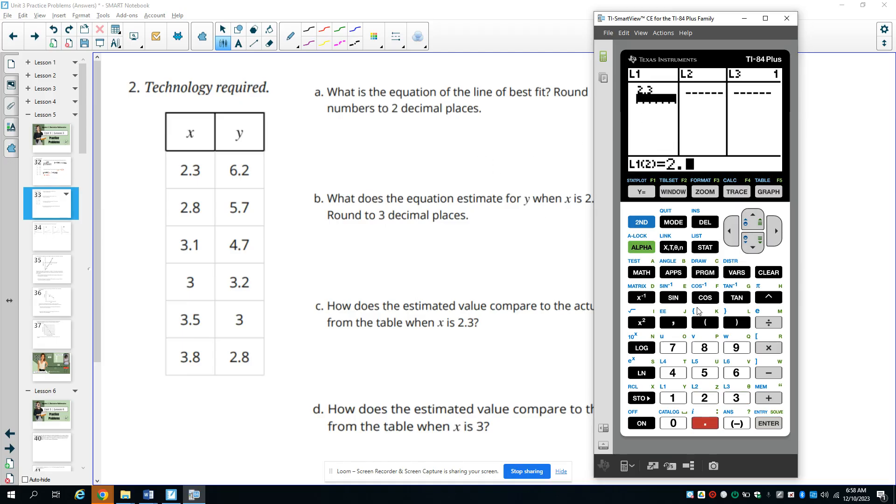So now we have 2.3, 2.8, 3.1, 3, 3.5, 3.8. And then 6.2, 5.7, 4.7, 3.2, 3, and 2.8.